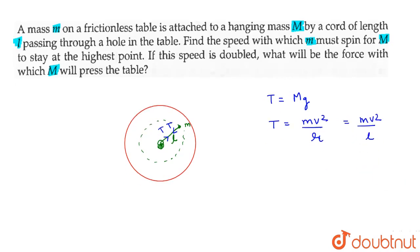Here we have value of speed. So, we have value of M v square by L equals to capital MG. So, V value is under root of capital MGL divided by m.